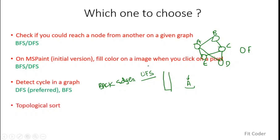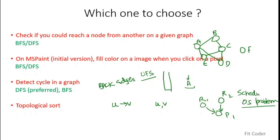Topological sorting means that if there is an edge from node U to node V, then in the topological sort U comes before V. This is an ideal case for operating system scheduling — for example, if resources R1 and R2 must be available before process P1 can be scheduled, this is a typical scheduling problem where multiple programs rely on different resources. For topological sorting, DFS is preferred, but we can rely on both BFS or DFS.